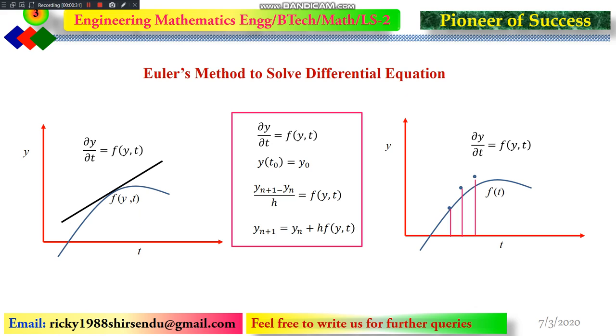Here you can see we have taken a simple Cartesian coordinate frame, where this is the y-axis and this is the t-axis. So horizontal axis is t-axis, and we have taken a particular differential equation of first order, say dy/dt equal to f(y,t). f is a function of y and t.